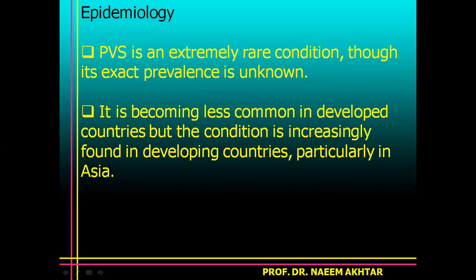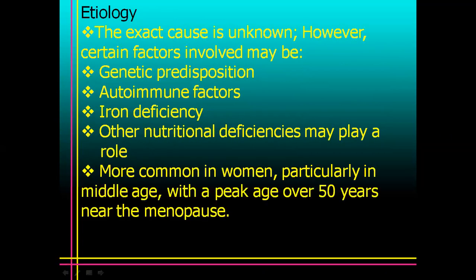Epidemiology: Plummer-Vinson syndrome is an extremely rare condition — though its exact prevalence is unknown, it is becoming less common in developed countries but increasingly found in developing countries, particularly in Asia. Etiology: the exact cause is unknown; however, certain factors involved may be genetic predisposition and autoimmune factors.